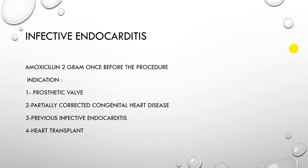What are the indications for infective endocarditis prophylaxis? It can be treated with amoxicillin 2g once before the procedure, 2 to 3 hours prior. The indications are: prosthetic valve, partially surgically corrected congenital heart disease, previous infective endocarditis, and heart transplant.